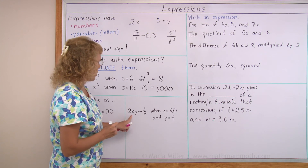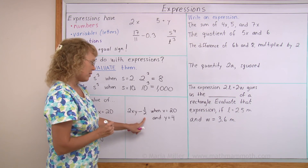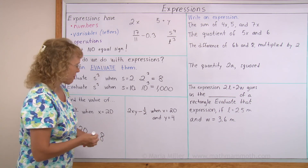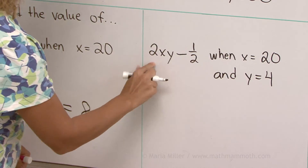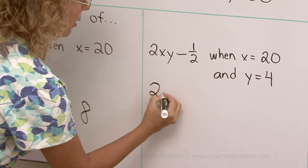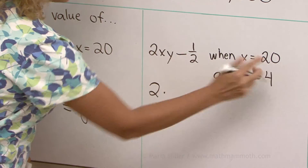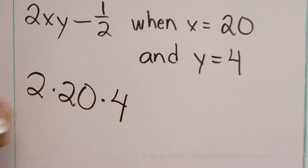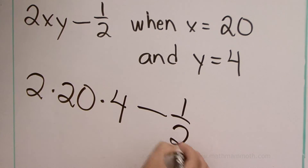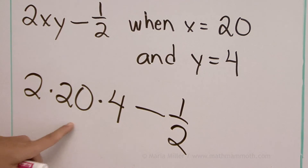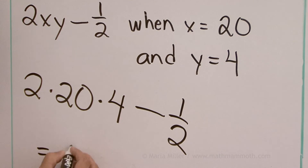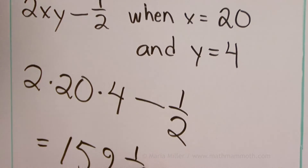Here's another: 2xy minus one half, when x has the value 20 and y has the value 4. I'll do the same — I'll just substitute the values into the expression. 2 times 20 times 4, minus one half. That gives us 2 times 20 equals 40, times 4 equals 160. So 160 minus one half gives us 159 and a half. That's the value of the expression for those values of the variables.